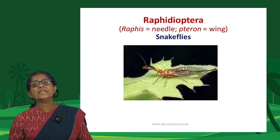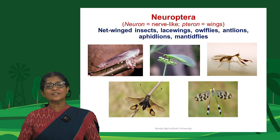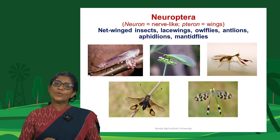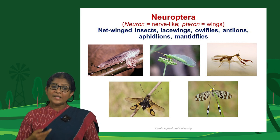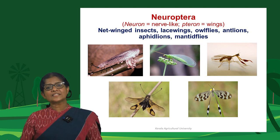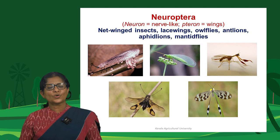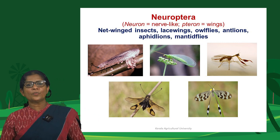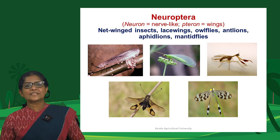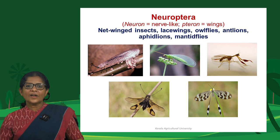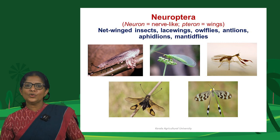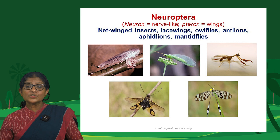Neuroptera are net-winged insects, including lacewings, owlflies, antlions, aphid lions, and mantidflies — a large, diverse, and mostly predacious group, with a few that are parasitic. The name Neuroptera is derived from the fact that their wings have a network of venation — 'neuron' refers to nerve (here meaning vein).